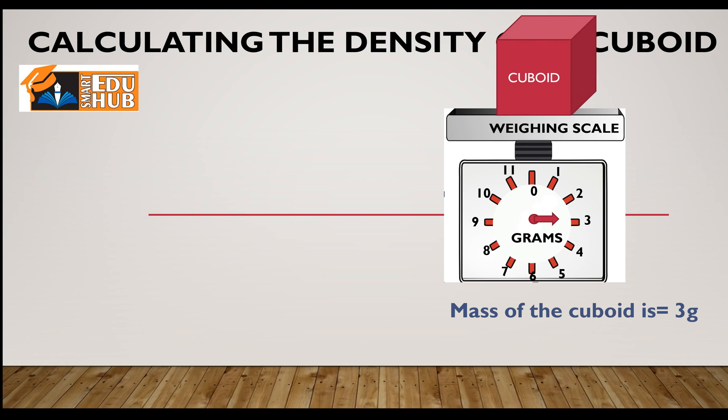The next thing is to find the dimensions of the cuboid — that is, the length, height, and width — in order to find the volume of the cuboid. Because density is equal to mass upon volume, and I already have the mass, now we need to find out the dimensions. So let's begin.